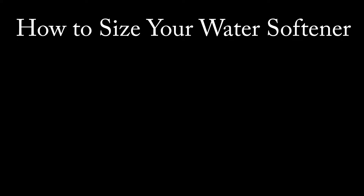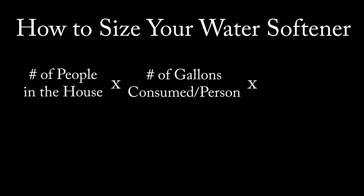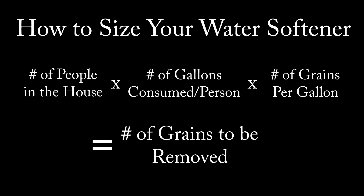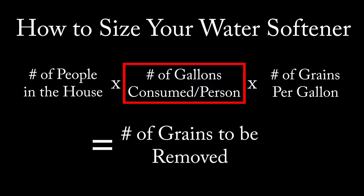This is the formula to properly size your water softener. It's the number of people in the house times the number of gallons of water consumption per person times grains per gallon, and this will equal the number of grains to be removed.